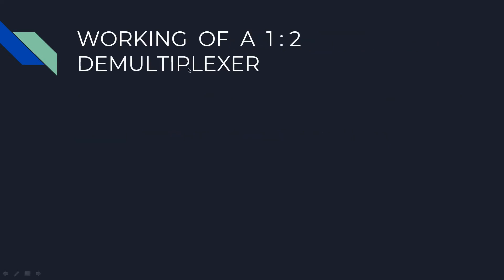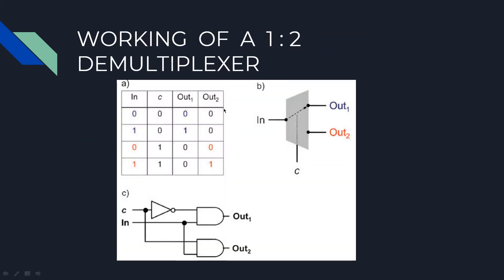Now let us see the working of 1 to 2 demultiplexer. When you know that there is one selection line, so the output lines will be 2 to the power 1 which is equal to 2.